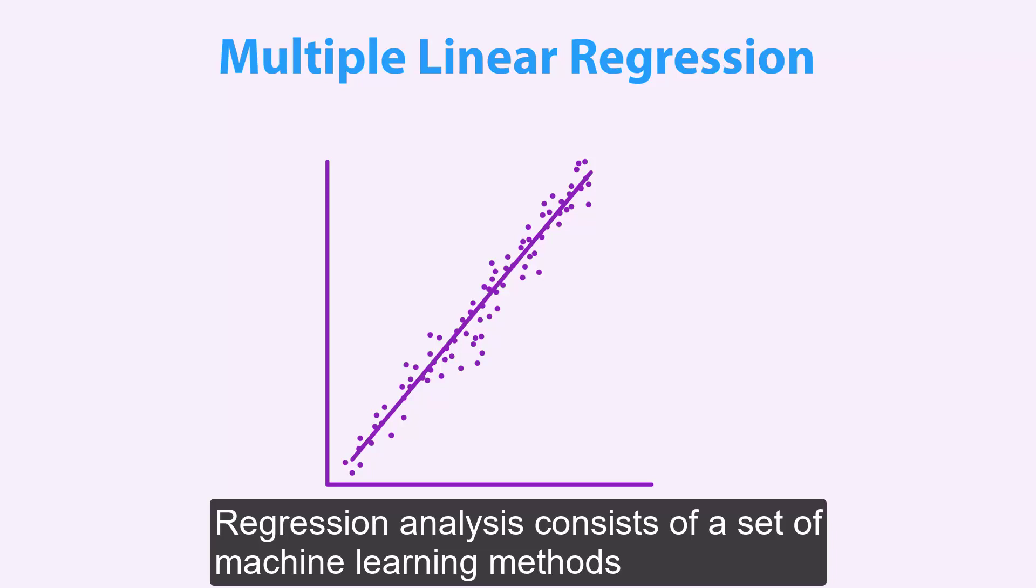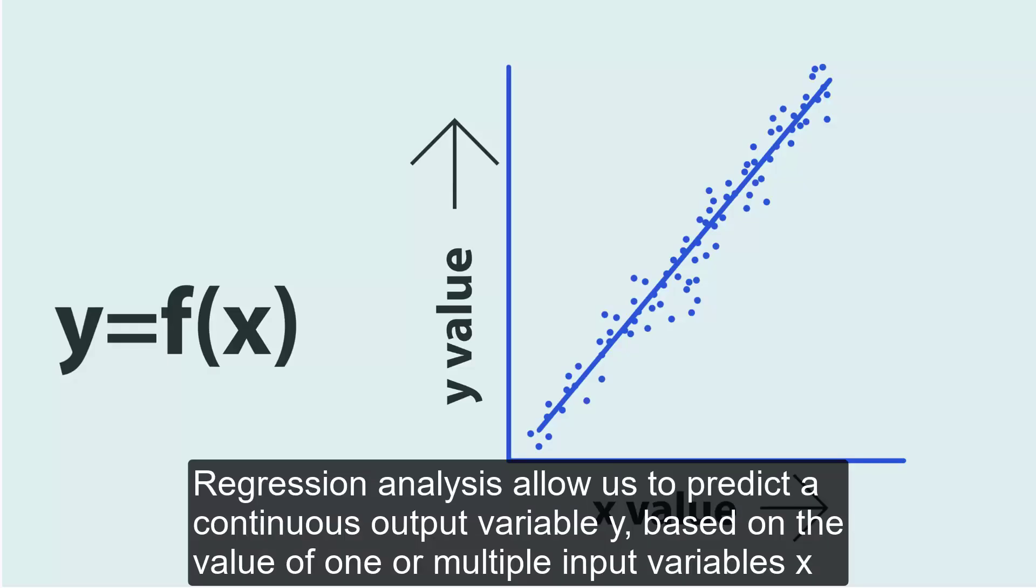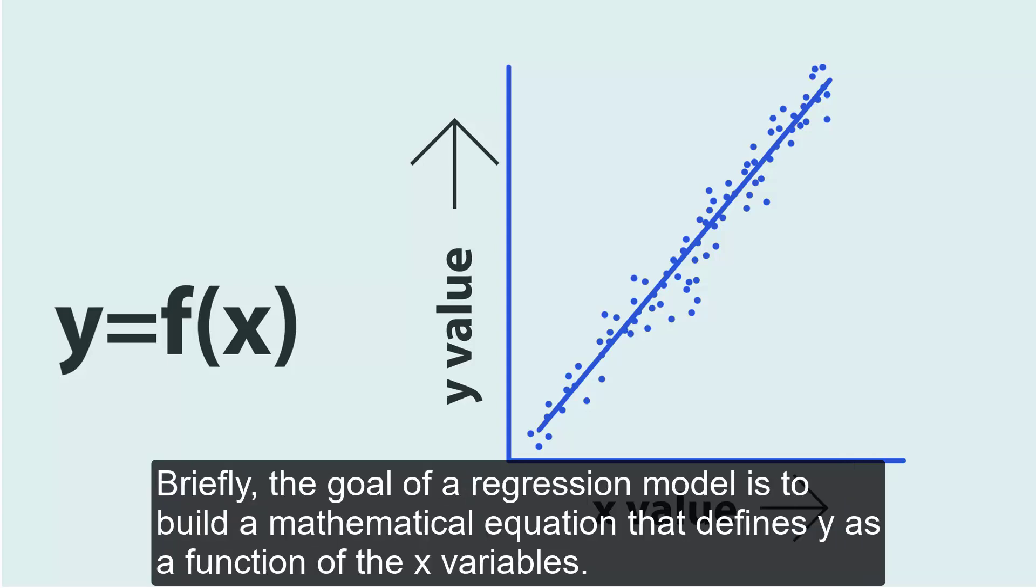Regression analysis consists of a set of machine learning methods that allow us to predict a continuous output variable y based on the value of one or multiple input variables x. The goal of a regression model is to build a mathematical equation that defines y as a function of the x variables.